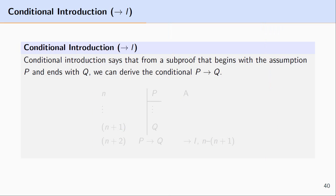In this video I want to take a look at a derivation rule known as conditional introduction. Conditional introduction says that from a sub proof that begins with the assumption P and ends with Q, we can derive the conditional P right arrow Q. That is, if we assume P and under this assumption we derive Q, we can derive a conditional from that reasoning to the conditional P right arrow Q.